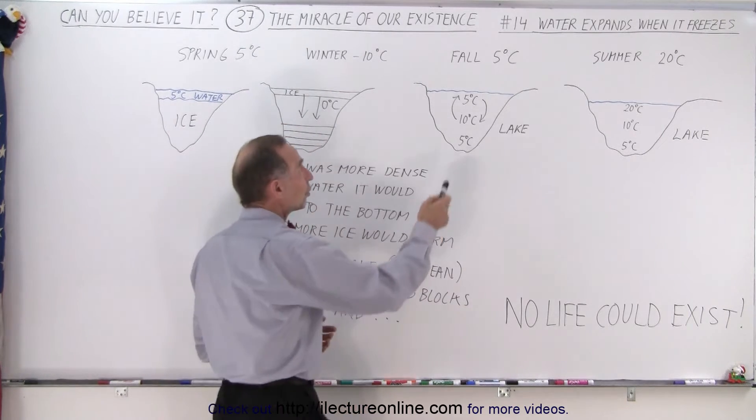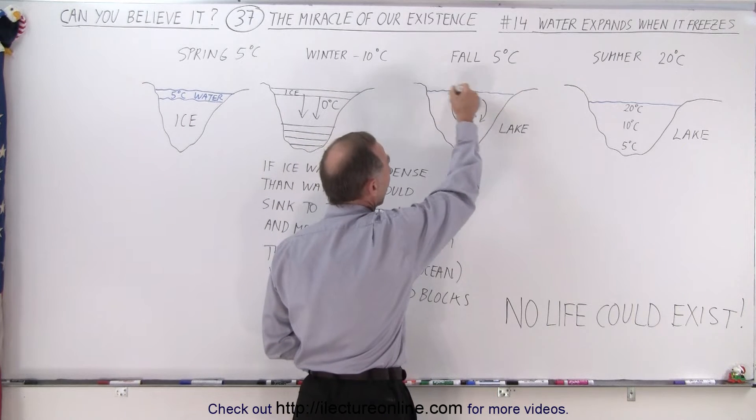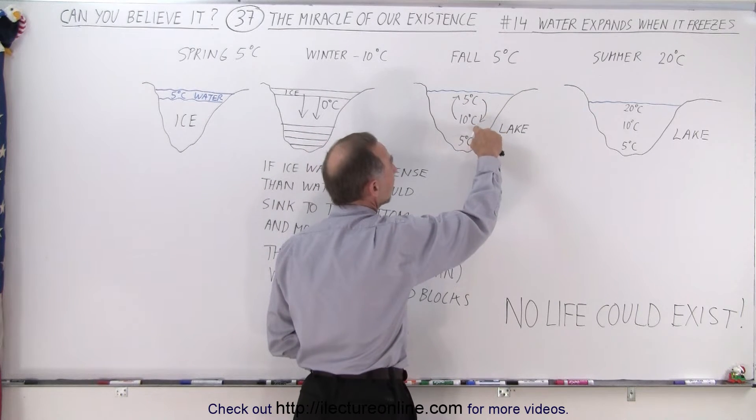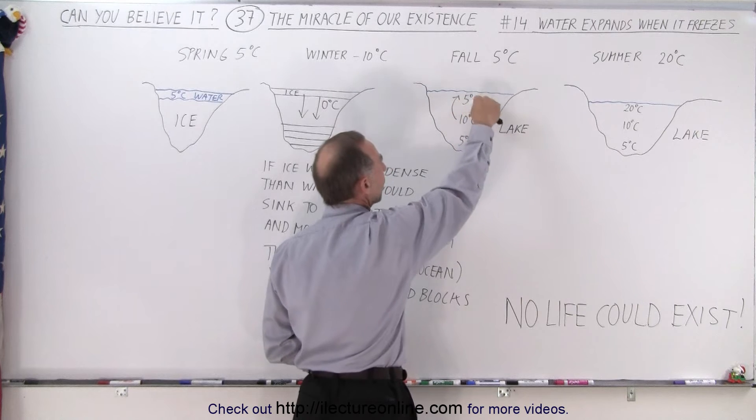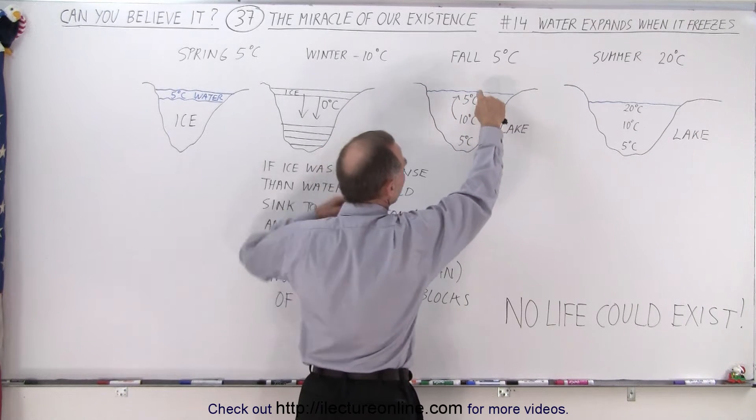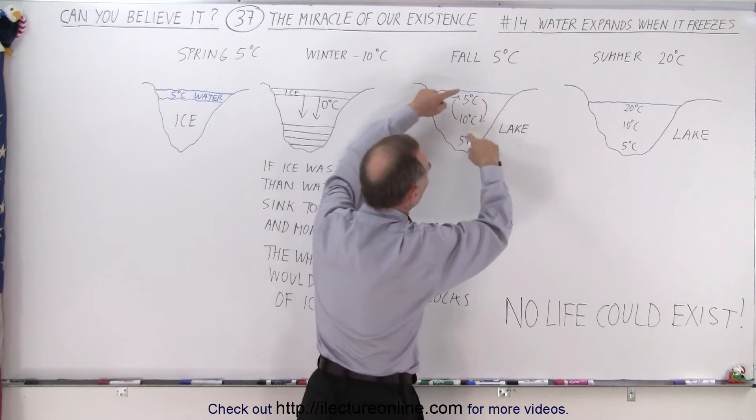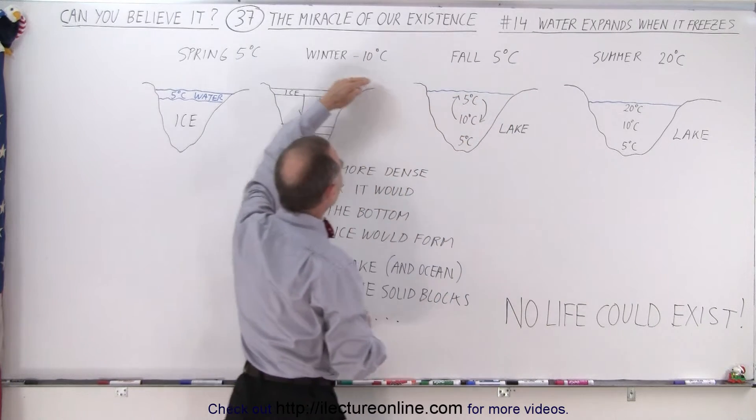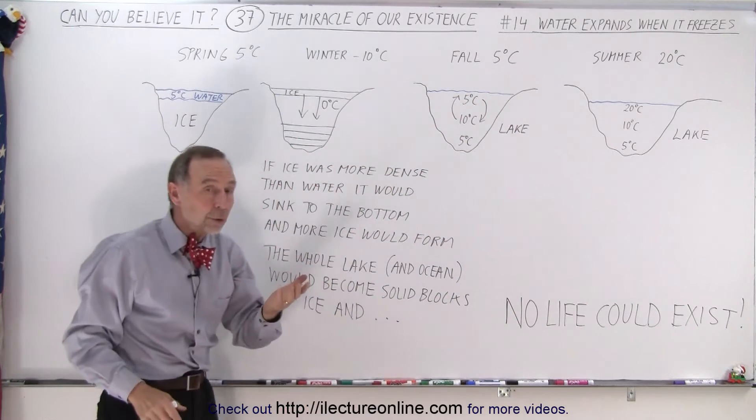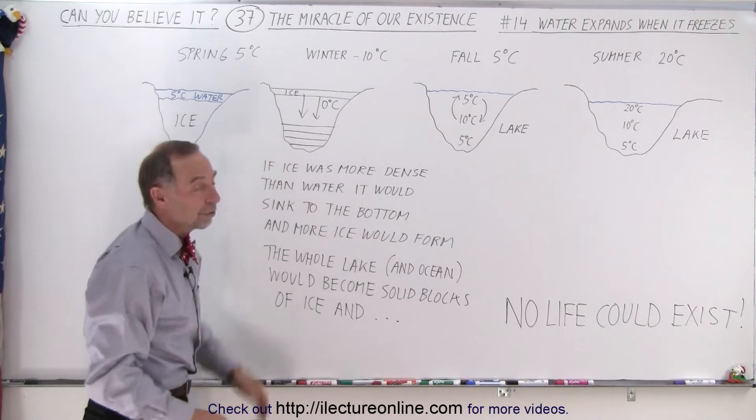As fall comes, notice that it gets colder outside. The water begins to cool down. Warmer water in the middle of the lake will rise to the top, colder water will sink to the bottom, and slowly the cold water will end up at the top. And then when winter arrives and becomes very cold outside, the water would begin to freeze.